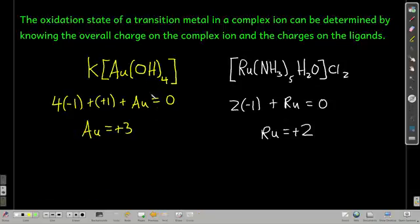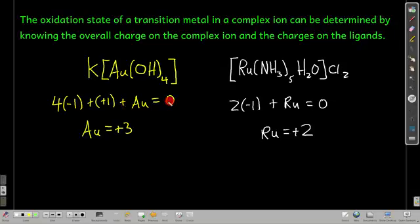When naming coordination compounds, you need to know the oxidation state of the transition metal. For example, to find the oxidation state of gold: hydroxide is −1 and there are four of them (4 × −1 = −4); potassium is +1; the overall charge is zero, so all oxidation states must sum to zero. Solving for gold gives +3 — the oxidation state of gold is +3.